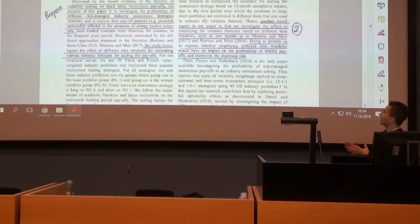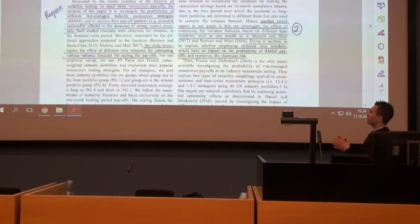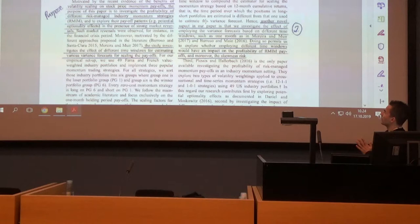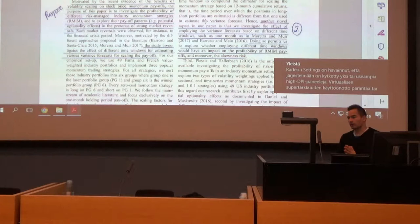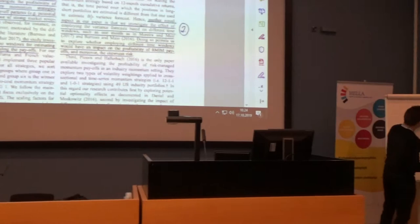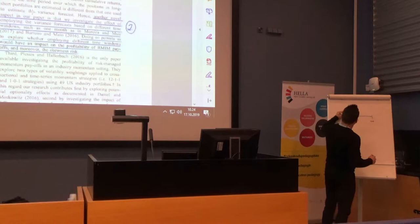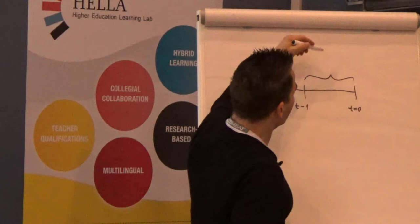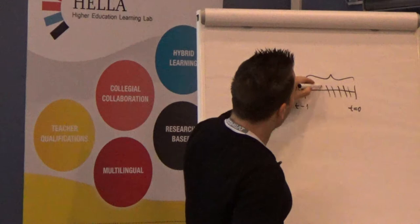The purpose of this paper was to investigate the profitability of different risk managed industry momentum strategies implemented among U.S. industry portfolios. We also employ different time windows. In the paper from yesterday, we used a realized volatility estimate based on a one-month time window. In this paper, we also investigate three-month and six-month time windows.